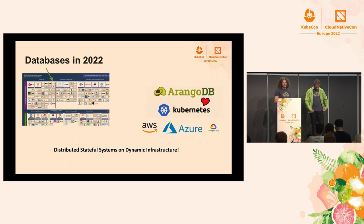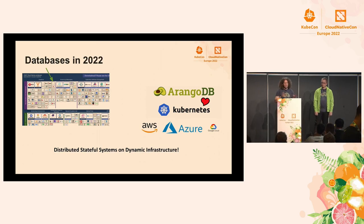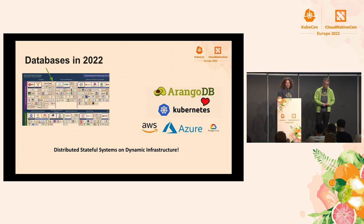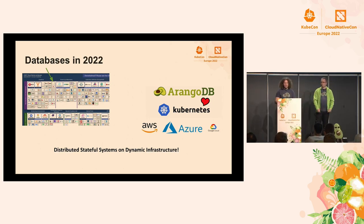Why are we here as a database company at KubeCon? If we look at databases in 2022, even looking at the landscape, it's the first block in the CNCF landscape — quite important. Walking around the sponsors, we see a bunch of different database companies. Being a database company nowadays usually means you're cloud native in some way. And interestingly, it also means you change a lot about how you build your database. Five years ago, it was servers in some basement with a fixed switch. Nowadays, it's a distributed stateful system on dynamic infrastructure — Kubernetes telling us what to do, AWS asking us to reschedule this or that.